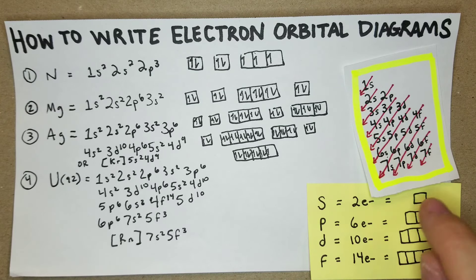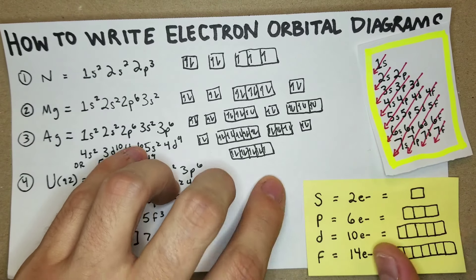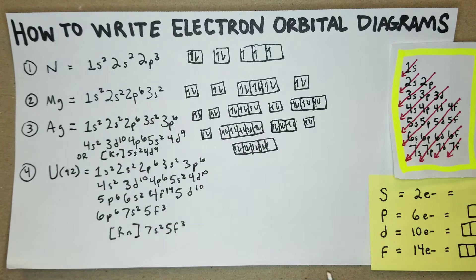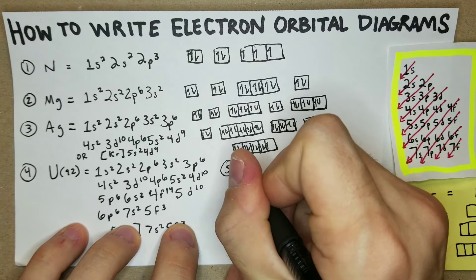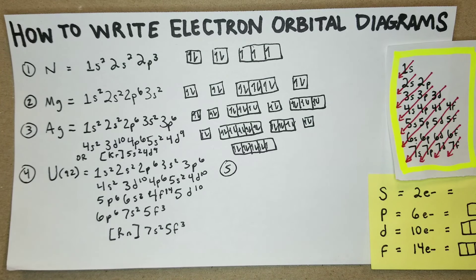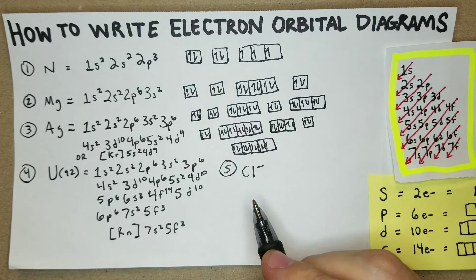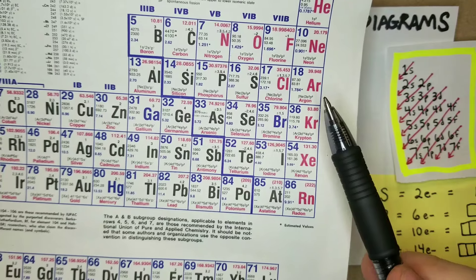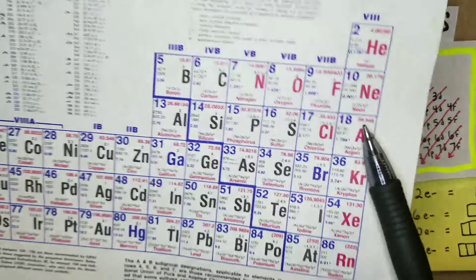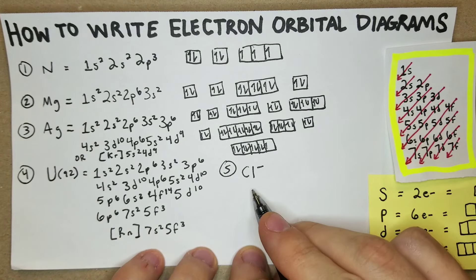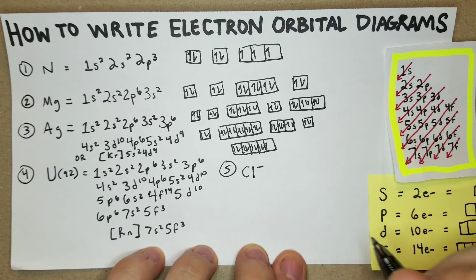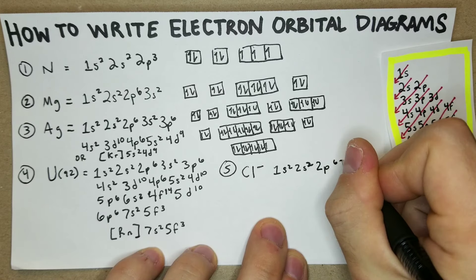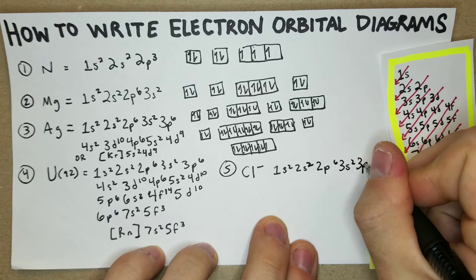There's one other thing necessary to cover: electron orbital diagrams with charges. For example, Cl⁻ is a common anion. Chlorine with a minus charge means it gained one electron, so it's going to have the same electron configuration as argon. We draw chlorine's configuration and add one electron: 1s² 2s² 2p⁶ 3s² 3p⁶.